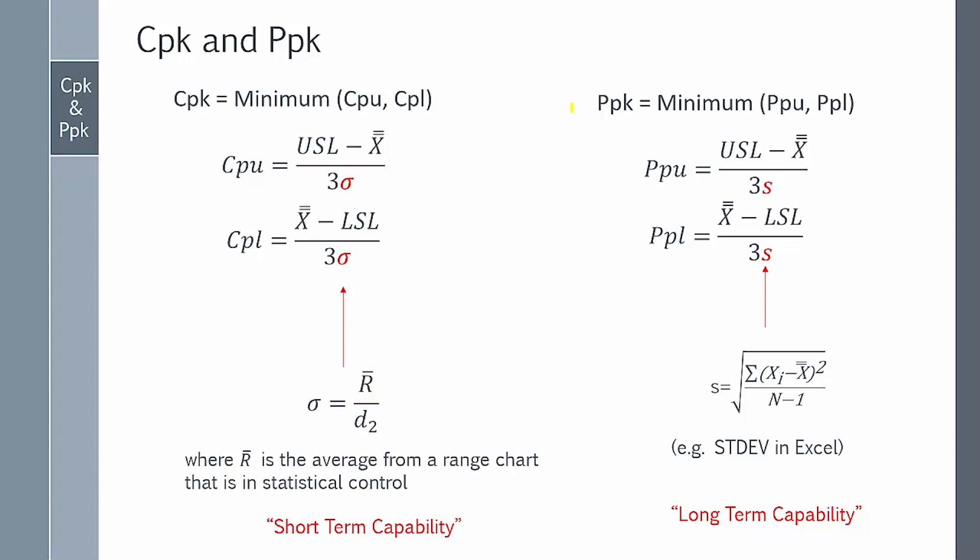Let's start with a brief review of the two indexes and how they're calculated. CPK is a process capability, the minimum based on an upper spec and lower spec. With the upper spec, it's the upper spec minus the average divided by 3 times sigma. Capability based on the lower spec is the average minus the lower spec divided by 3 times sigma. In this case, this little red sigma is calculated from the average range from a range control chart that's in statistical control. It's given by the average range divided by D2, where D2 is a control chart constant that depends on subgroup size. CPK is sometimes called the short-term capability because it's based on the within variation within a subgroup.